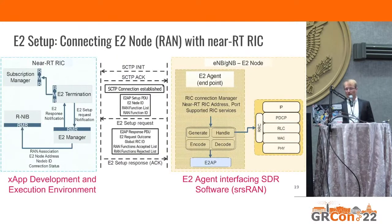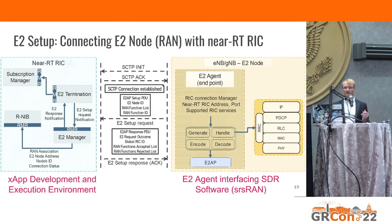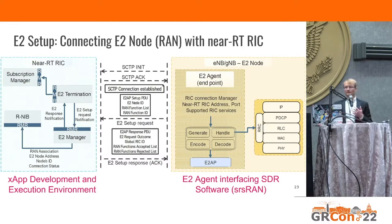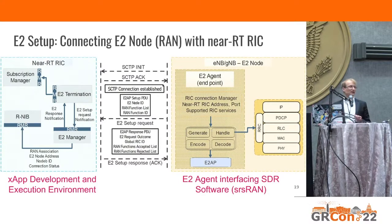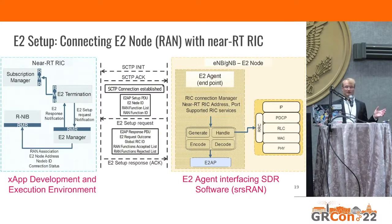To give an example: once we identified what we need from the standard and compiled it, we have a near-realtime RIC on the left with an E2 termination that receives E2 messages and an E2 manager. On the right side we implemented an E2 agent, which is an endpoint that interacts with the RAN. Communication goes between these two E2 endpoints, and through that we can access the RAN for getting parameters or configuring it. On the left you have the X-app development and execution environment; on the right the E2 agent interfaces with the software radios.